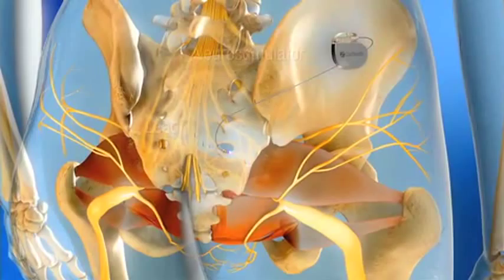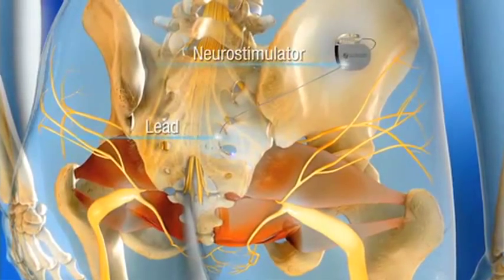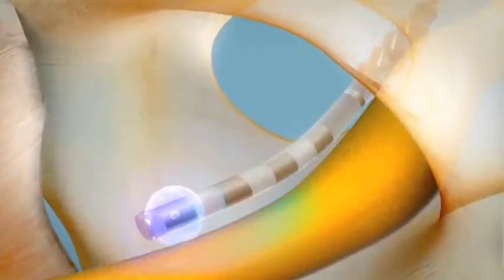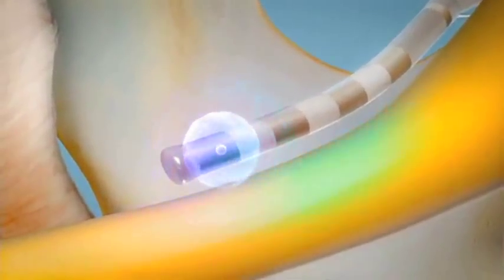Medtronic sacral neuromodulation delivers electrical stimulation to a sacral nerve via an implanted neurostimulator. The neurostimulator provides an electrical charge to an area near the sacral nerve, resulting in altered neural activity.